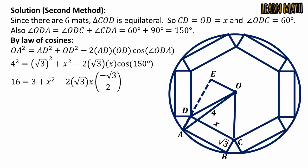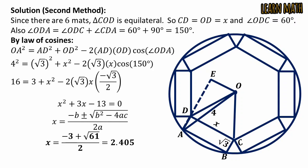Simplifying this and putting cosine 150 degrees equals minus square root of 3 by 2, we get 16 equals 3 plus x squared minus 2 times square root of 3 times x times minus square root of 3 by 2, which simplifies to the same quadratic equation x squared plus 3x minus 13 equals 0. We can solve this by quadratic formula to get the required length of the placemat.